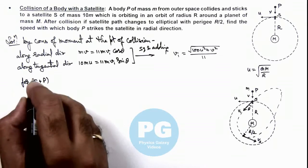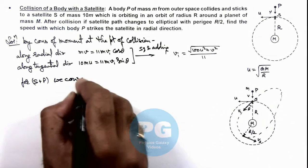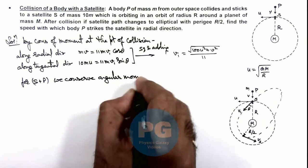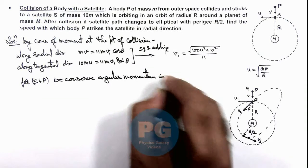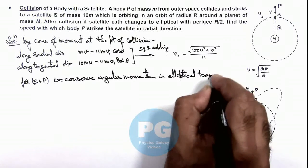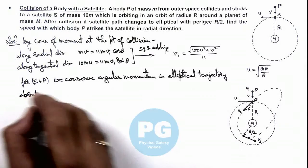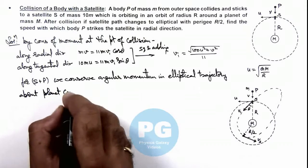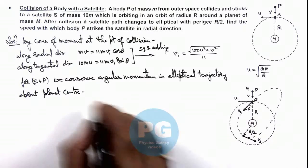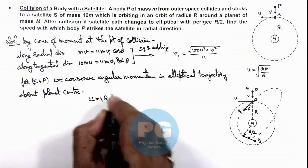For S plus P, when the body P sticks to S, we conserve angular momentum in elliptical trajectory about planet center, which can be given as: initially its angular momentum was 11m v1 r sine theta.